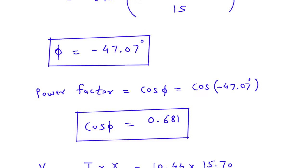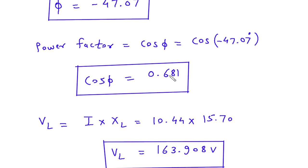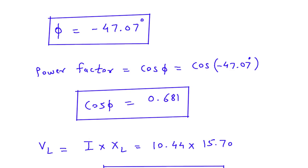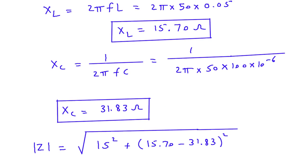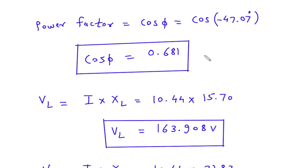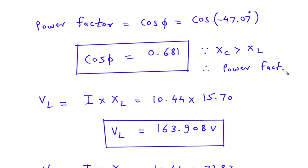Here we can observe one more thing. The power factor is 0.681. Since XC value is 31.83 and XL value is 15.70, we can see that XC is greater than XL. Therefore, the power factor is leading.